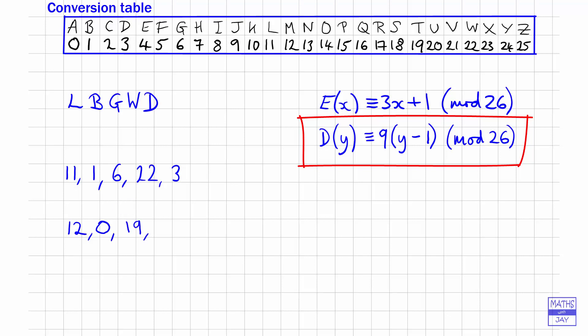And then 22 take away 1 is 21, times 9 is 189. And 189—oh, that's a big one, isn't it? So looking at 26 times 7 is 182, so that gives us a remainder of 7. And then the last one, 3. 3 minus 1 is 2, 2 times 9 will be 18, and that will be it.